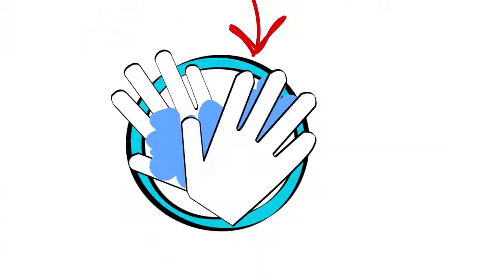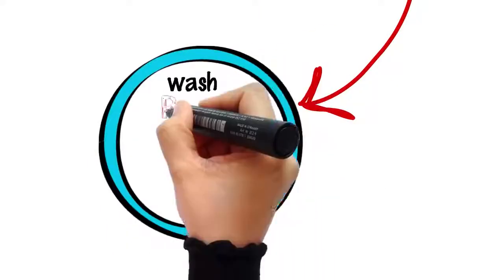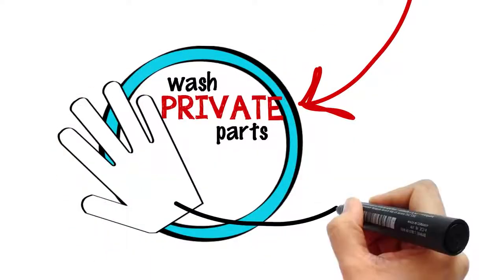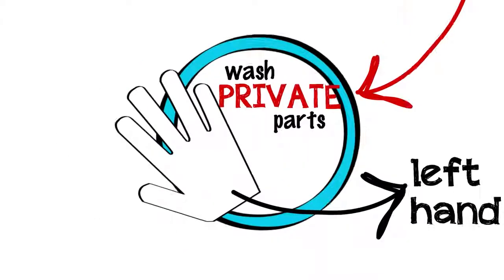Wash your hands three times. Then with your left hand, wash your private parts and anywhere else that is contaminated with traces of impurity.